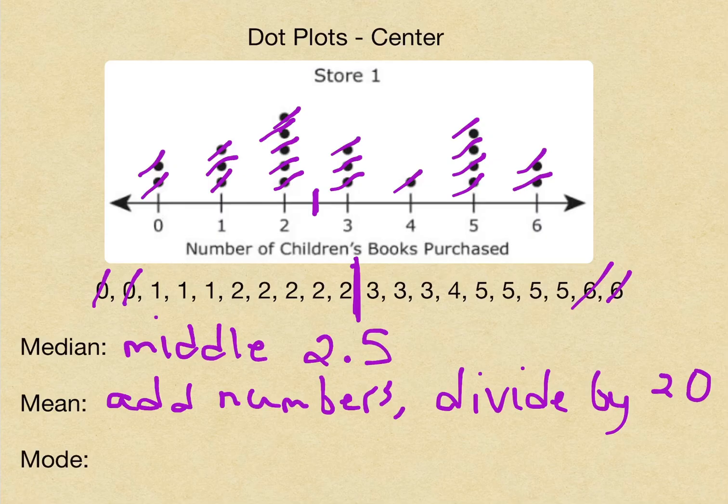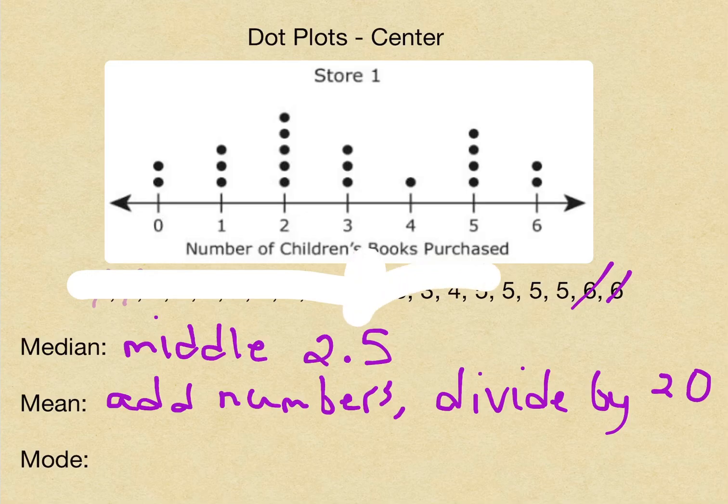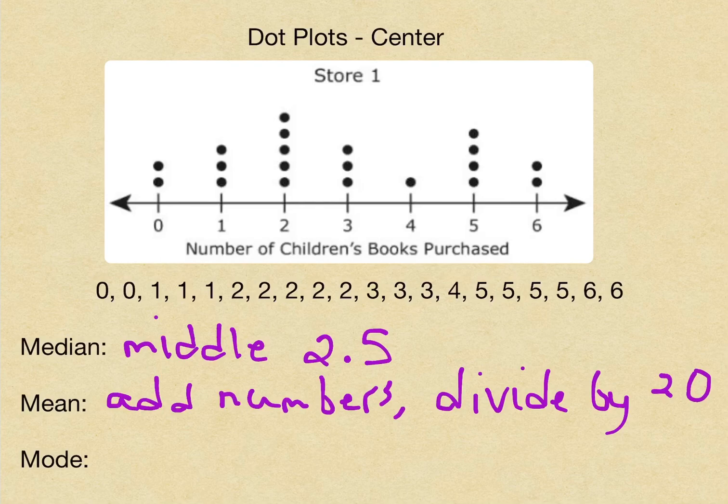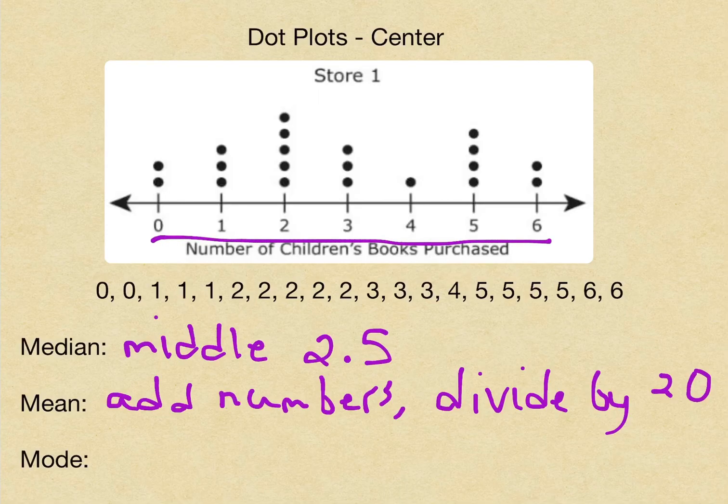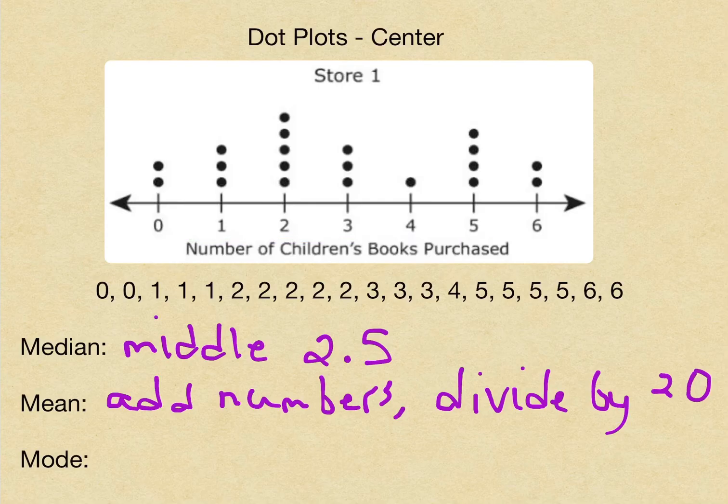Now for our mode. For our mode, that's the number that appears the most. Now some people want to jump straight to the end and say the most, the biggest number, the six. But mode does not mean that it's the highest number. It means the number on the number line that has the most dots. Which number do you think is the mode?